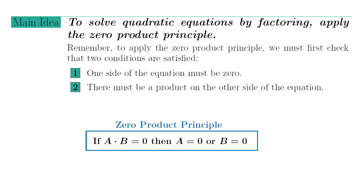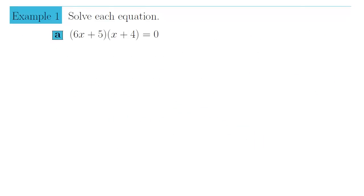Let's now work several examples where we're solving quadratic equations by factoring. Example 1. Solve each quadratic equation. 1a. The quantity 6x plus 5 times the quantity x plus 4 equals zero. Notice, our equation is set up perfectly. We have a zero on the right side and a product on the left.